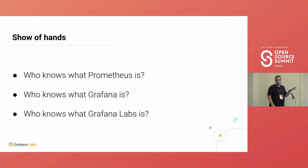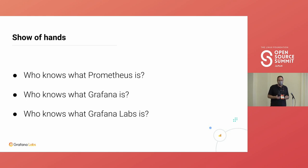Prometheus is a monitoring system. The modern word is observability, but it's a metric-based monitoring system where you can ingest numbers about your operations — about your webshop, your Kubernetes, your clusters, whatever. It's the standard metric monitoring system within all of Cloud Native.